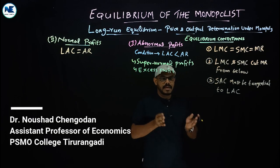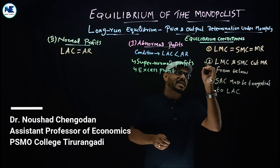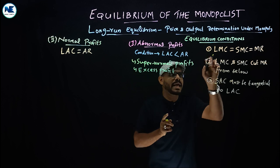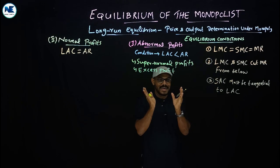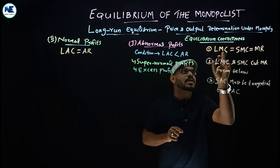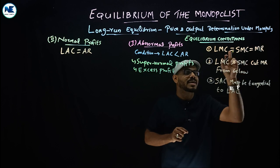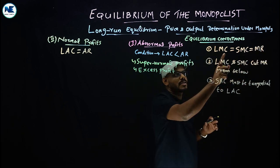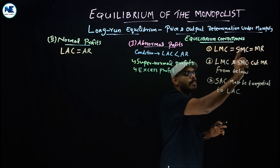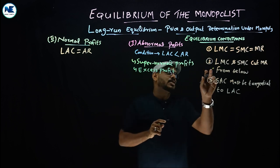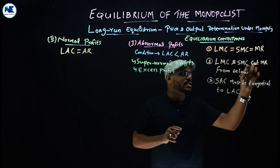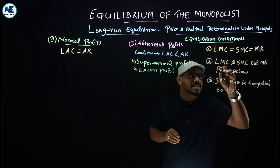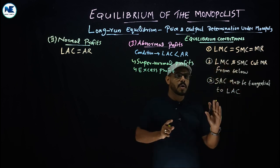Now let's look at the long-run equilibrium conditions. The first condition is that long-run marginal cost (LMC) is equal to short-run marginal cost (SMC), and both are equal to marginal revenue (MR). The second condition is that LMC and SMC must cut the marginal revenue curve from below.